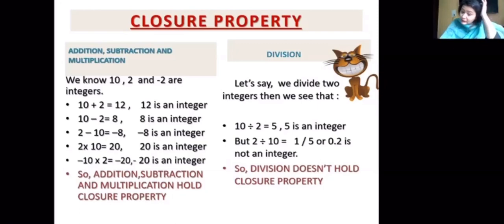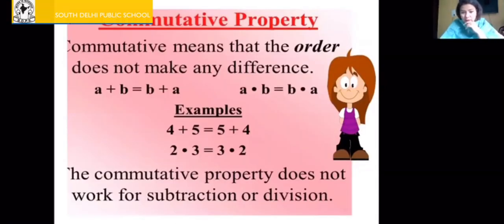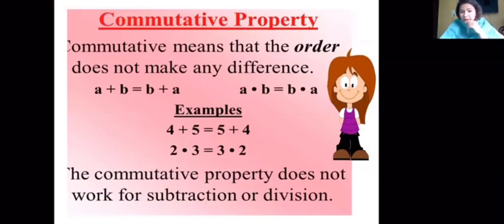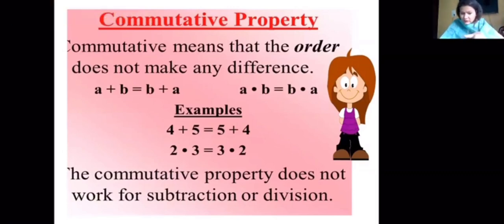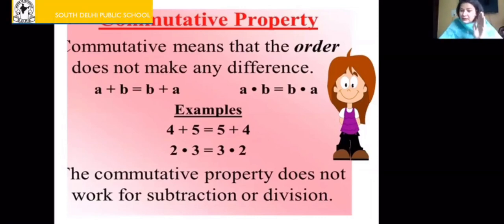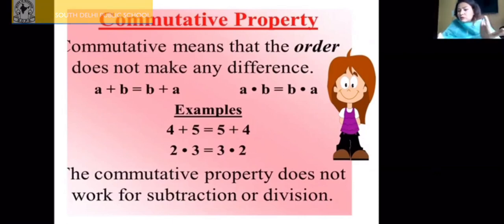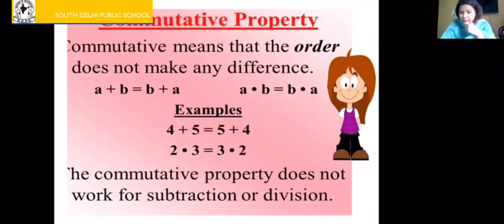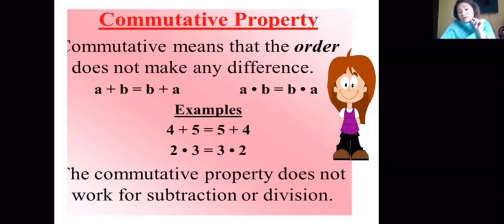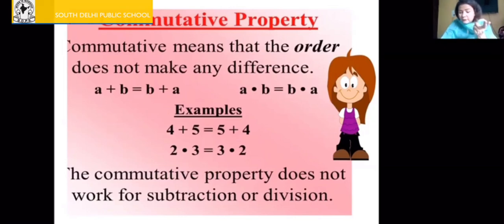Next, commutative property. Commutative property means that when you add two integers, the order does not matter: a plus b equals b plus a. For multiplication: a multiplied by b equals b multiplied by a. For example, 4 plus 5 is 9, and 5 plus 4 is also 9 — so addition is commutative. For multiplication: 2 multiplied by 3 is 6, and 3 multiplied by 2 is also 6 — so commutative property holds for addition and multiplication.